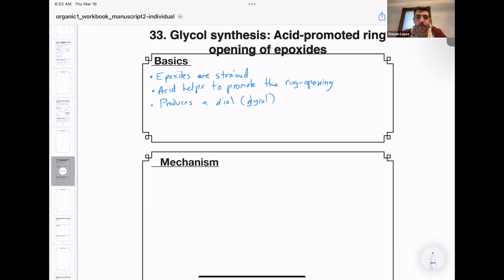So here are the basics. First of all, epoxides are strained three-membered rings that look like this. Acid helps to promote the ring opening. We'll be discussing exactly how that works in the mechanism part of this. And what you ultimately produce is a diol, also known as a glycol. So the word diol is di for two and ol for alcohol.